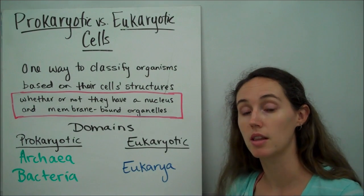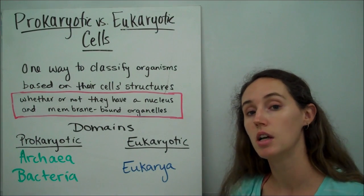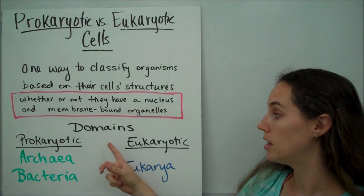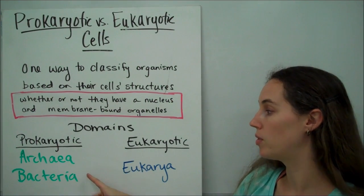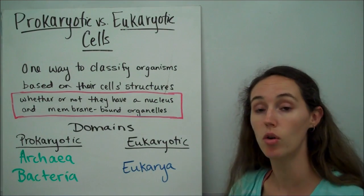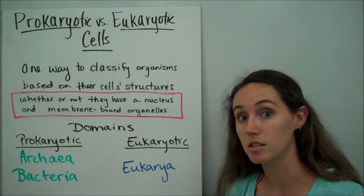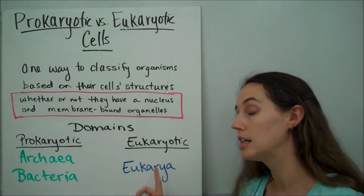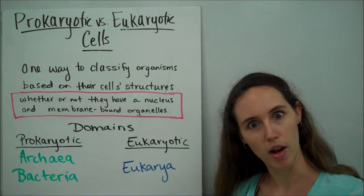Now, the organisms that have these different kinds of cells are prokaryotic organisms, are found in the domains archaea and bacteria, and all organisms that have eukaryotic cells are found in the domain eukarya. I wonder where they got their name from.